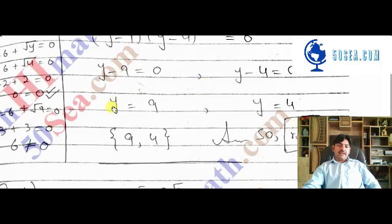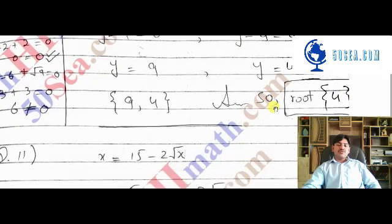So if we calculate the values of y: y - 9 = 0 means y = 9, and y - 4 = 0 means y = 4. So the two values of y are 9 and 4.